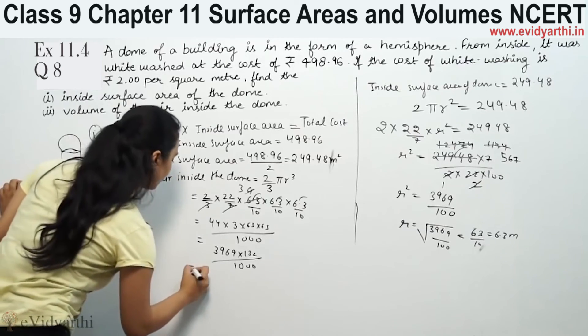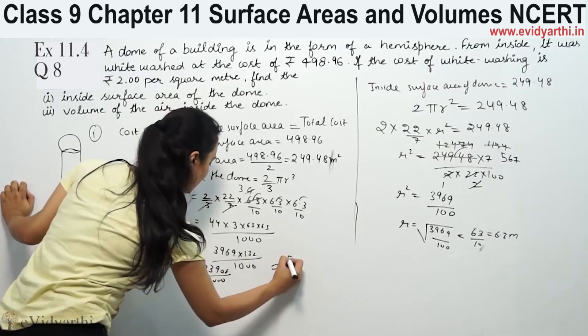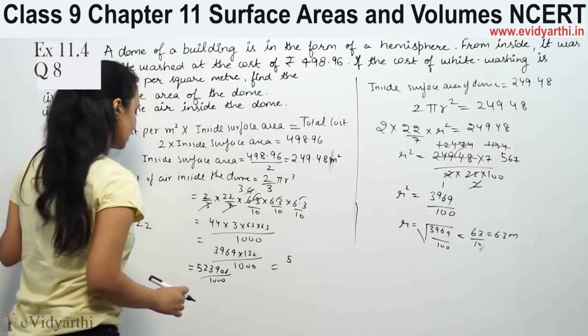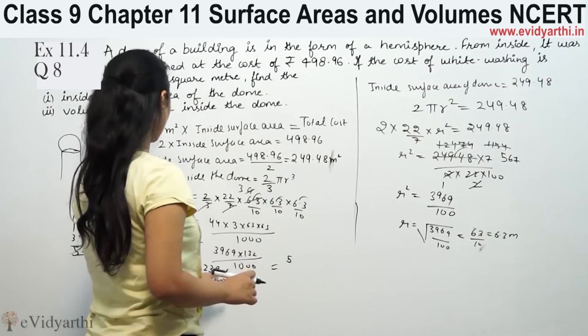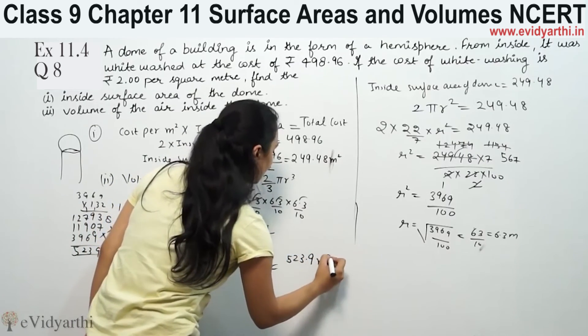The result is 523,908 divided by 1000, which means 3 decimal places. This is 523.09 meter cube.